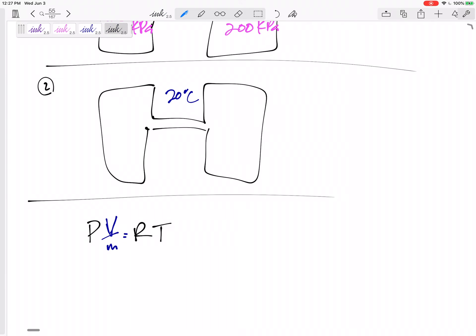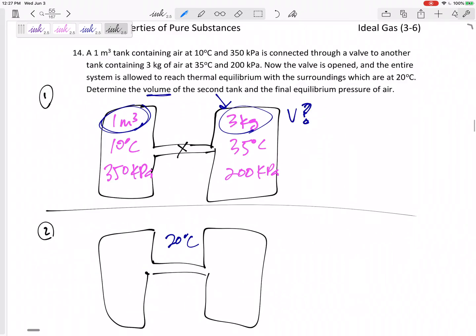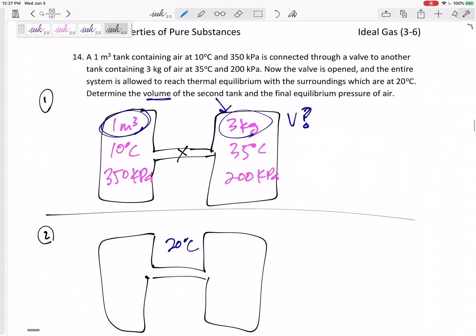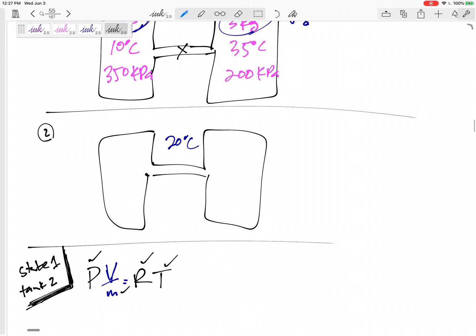I am just going to isolate state one, tank two. Sometimes I do this in lots of my classes. I make a note of what am I looking at. This equation is just for state one and it's just for tank two, because I know the mass 3 kg, I know the pressure 200 kPa, I know the temperature 35. I could get the R from table one. So the only unknown in PV=RT would be the volume, which I could solve for.